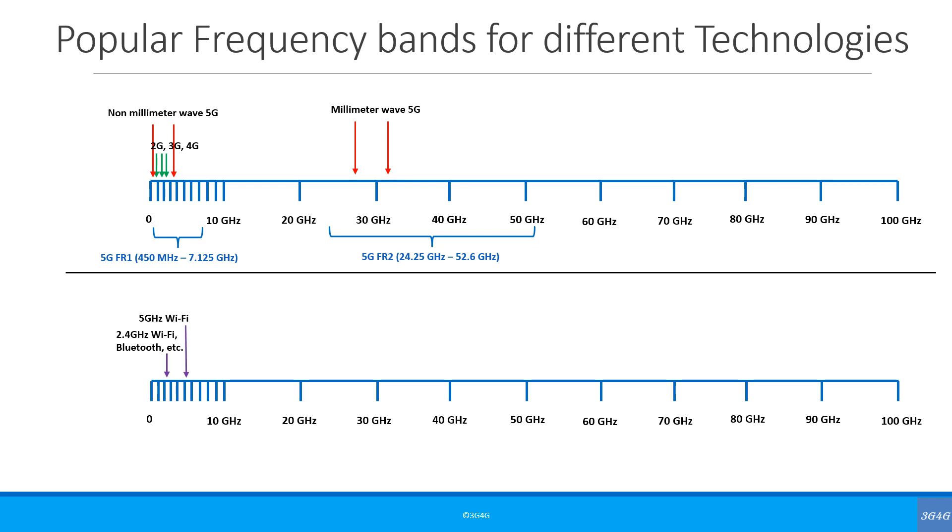Then we have the 5 GHz Wi-Fi. The new 802.11 AX can also work in the 6 GHz band. The new standard after 802.11 AX being studied uses frequency range from 1 GHz to 7.12 GHz. Then you have the 60 GHz Wi-Gig, which can be 802.11 AD or 802.11 AY standards.